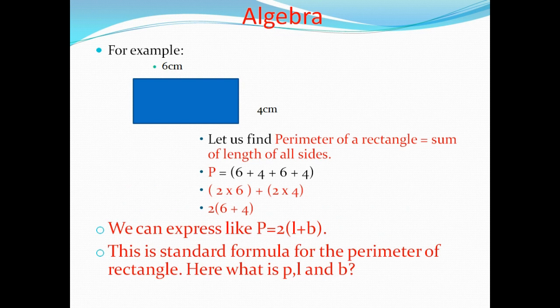Let me show some examples of how we can make a general formula using Algebra. Here you can see a rectangle diagram. The length is 6 cm, the breadth is 4 cm. If you find out the perimeter — that is the sum of the lengths of all sides — what is the formula?